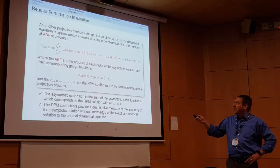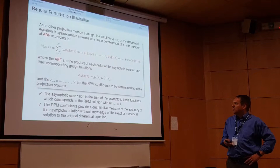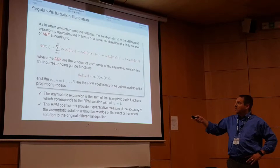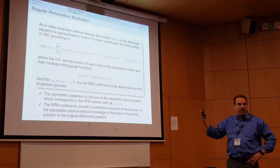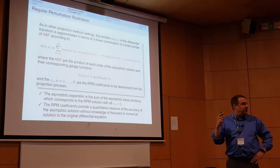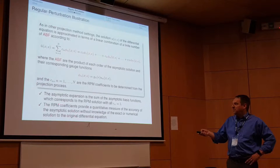The basis functions are the gauge functions times each-order UN, combined through the CN RPM coefficients. When all the C's equal one, the trial function reduces to the asymptotic expansion — a good consistency check. After computing the RPM coefficients, we should recover C values approaching one as epsilon goes to zero, and I'll show that this is indeed the case.